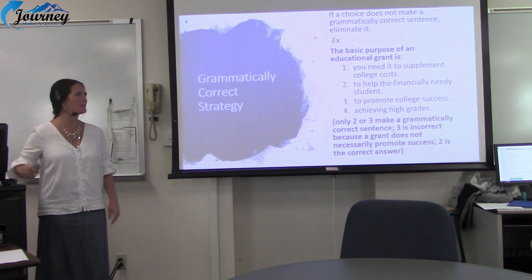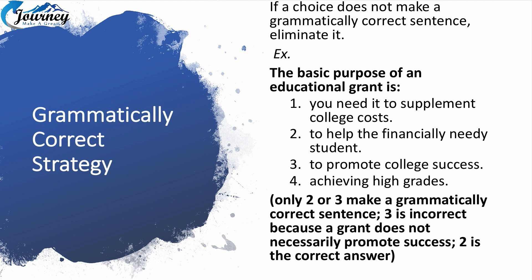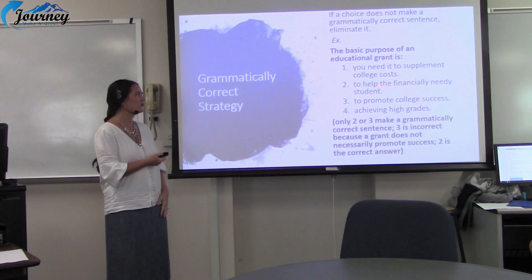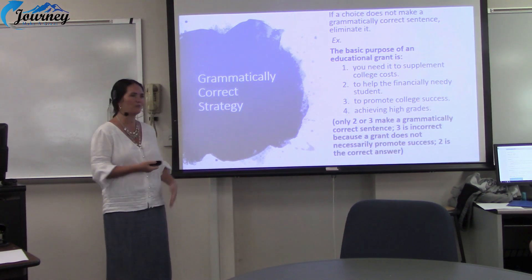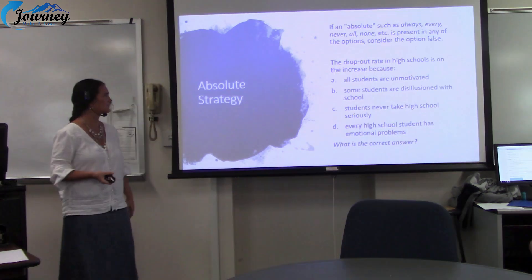A Grammatically Correct Strategy: if a choice does not make a grammatically correct sentence, take it out. 'The basic purpose of an educational grant is...' — if you finish the sentence with choice one: 'you need it to supplement college costs,' it doesn't fit. Choice four: 'achieving higher grades' — doesn't even fit, doesn't make sense. Only sentences two and three are grammatically correct: 'to help the financially needy student' or 'to promote college success.' And of those two, three is wrong because a grant does not promote or guarantee success.